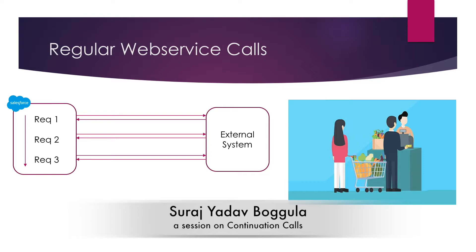Let me give one more scenario before moving further. Assume that request one is taking a longer time — maybe a minute or two. In such cases, the other requests have to wait. Most of you may have experienced this at a supermarket or grocery store: if the person in front of you has a fully loaded cart, you have to wait a long time even though you only have two or three items. To overcome such problems, we have continuation.